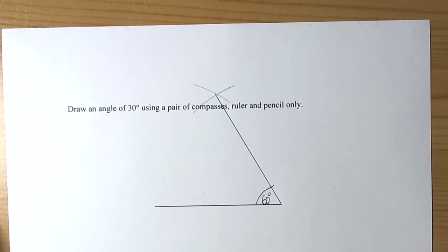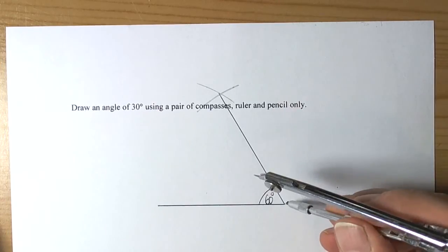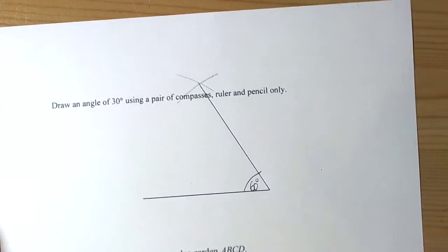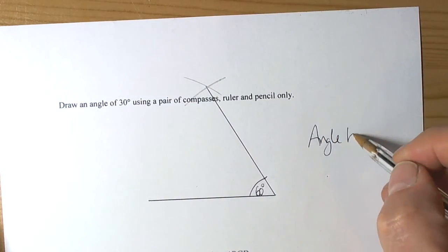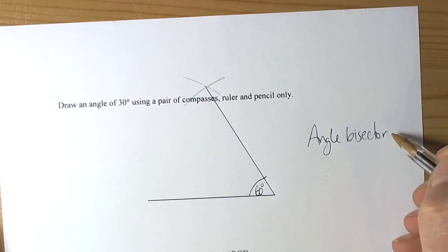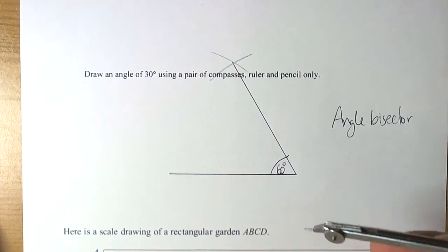Because it says it wants us to draw a 30 degrees angle, the question is telling us to split this angle in half. We would draw an angle bisector. Because we want to split an angle in half, it's called an angle bisector - equal halves.